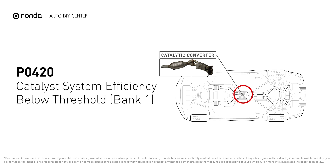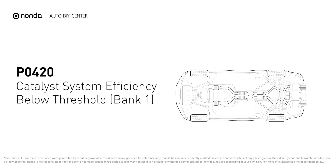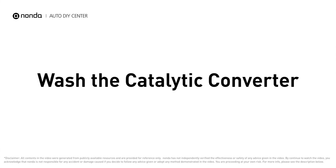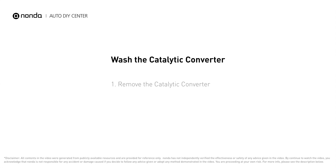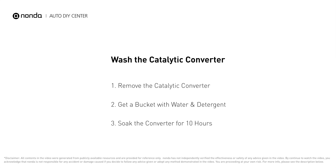converter is not functioning efficiently, so the vehicle is increasing the output of harmful pollutants. If you are getting a P0420 error code, this video is going to show you a practical solution to fix the error code at home.